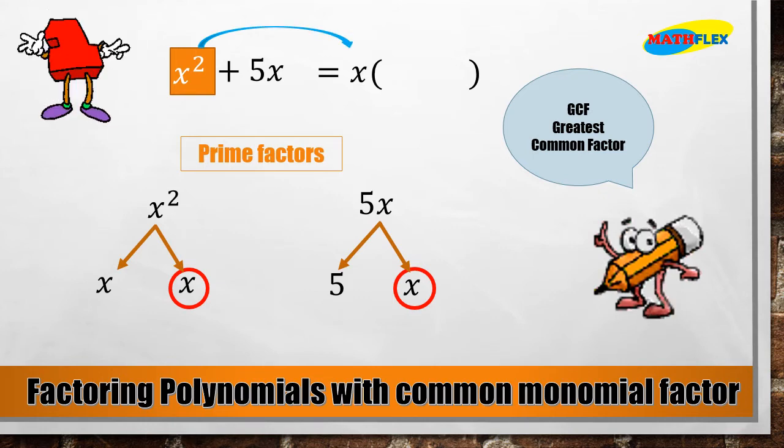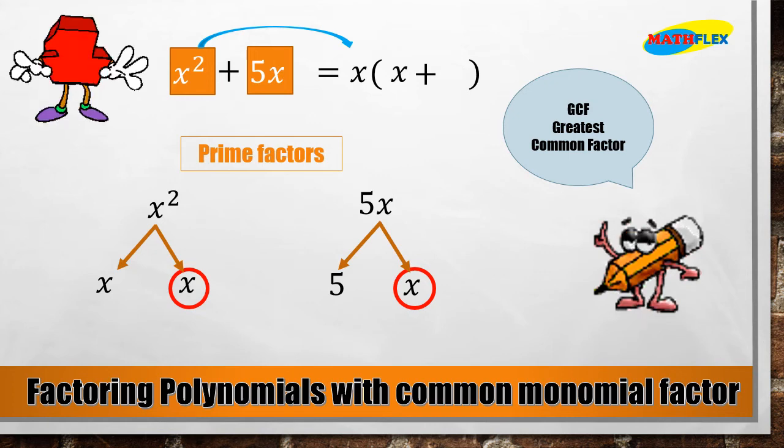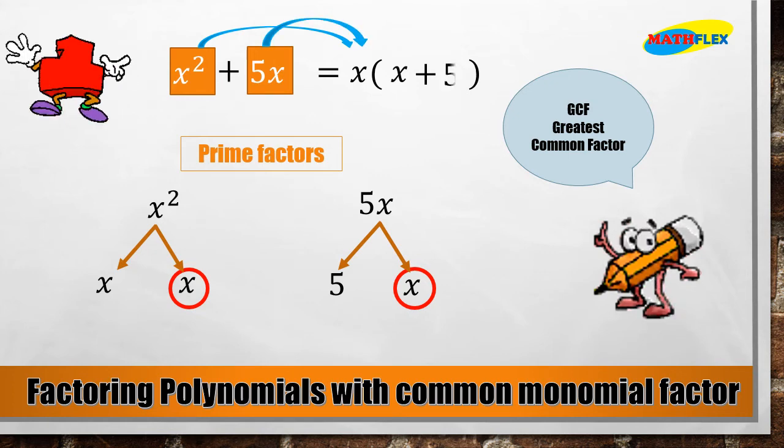Now dividing x² by x, we got x, and we carry the operation plus. Then dividing 5x by x, we got 5.